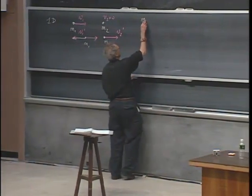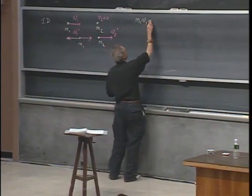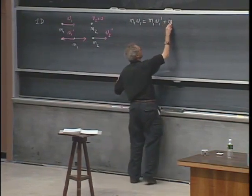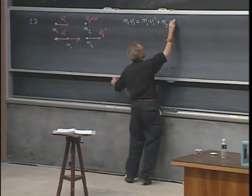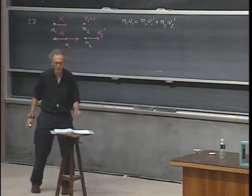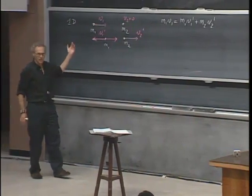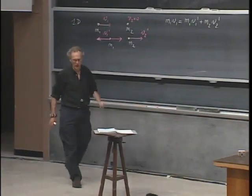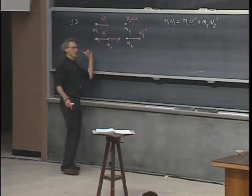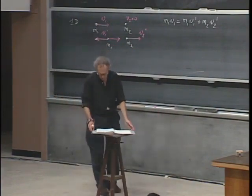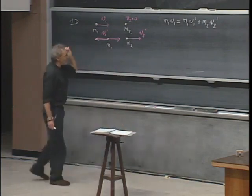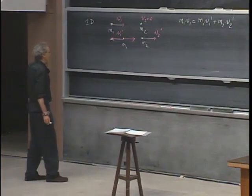You can write down that M1 V1 must equal M1 V1 prime plus M2 V2 prime. Since this is a one-dimensional case, you can leave the vector arrows off and the signs will automatically take care of the direction. If you call this direction plus, then a minus sign means the velocity is in the opposite direction. So now we need a second equation.